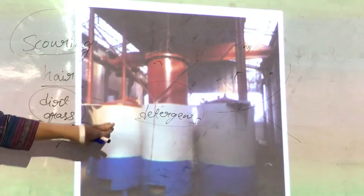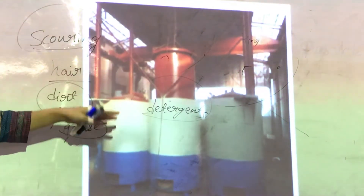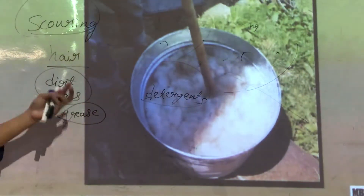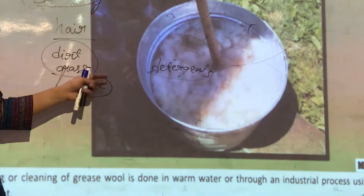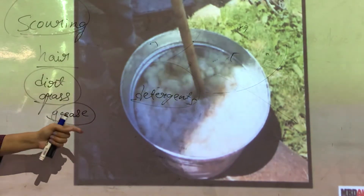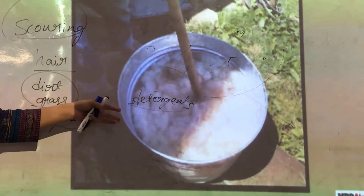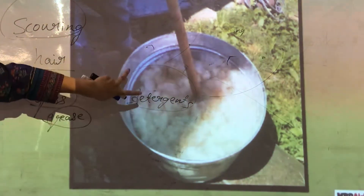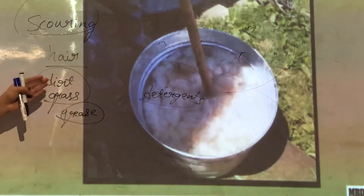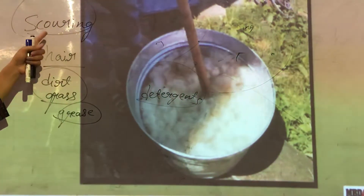As you can see here, these are the large tanks in which the scouring process is done. Also, if scouring is being done in small amounts, it can be easily done at home as well — we just take the hair from the sheep and can easily clean it using detergent. So this is the second process, which is known as scouring.